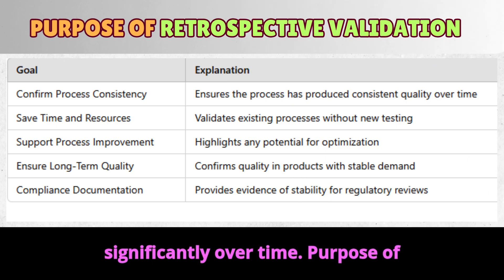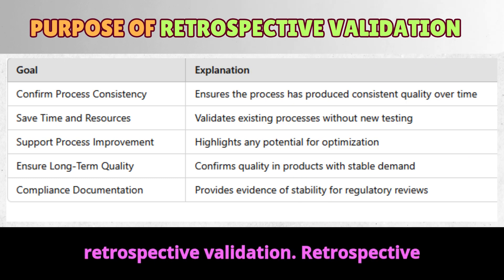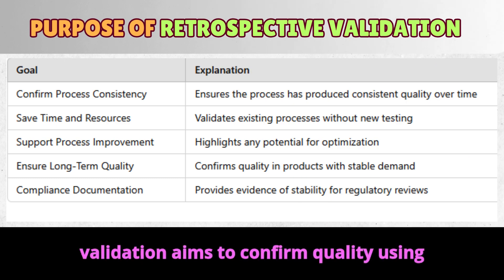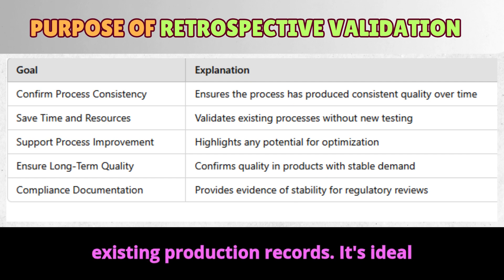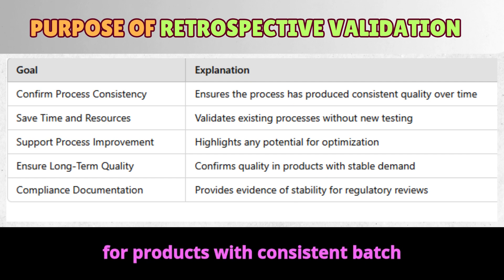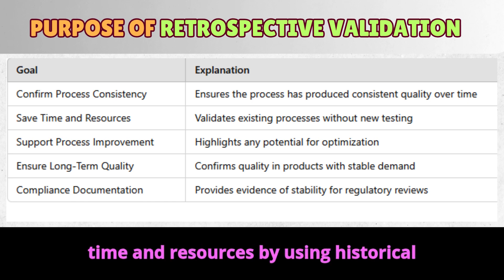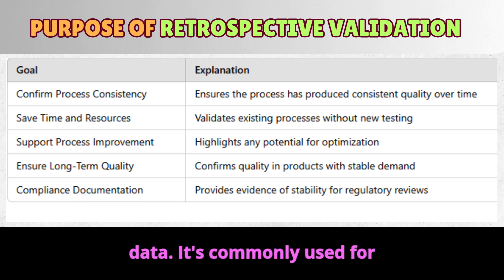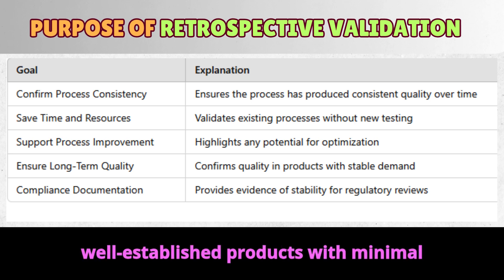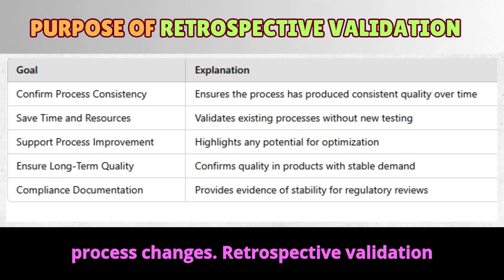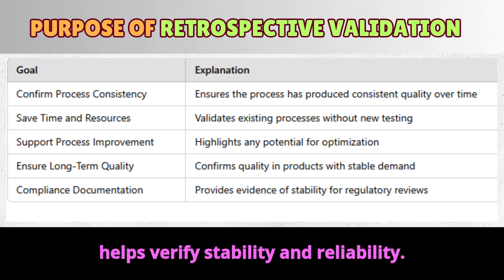Purpose of retrospective validation. Retrospective validation aims to confirm quality using existing production records. It's ideal for products with consistent batch results over time. This validation saves time and resources by using historical data. It's commonly used for well-established products with minimal process changes. Retrospective validation helps verify stability and reliability.